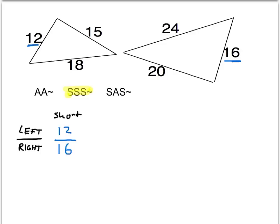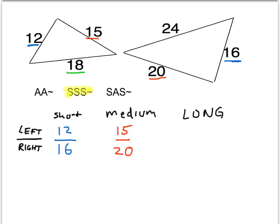And I want to see if those ratios are equal to the medium side lengths. The medium side length in the left triangle is 15. The medium side in the right triangle is 20. So the ratio will be 15 divided by 20. And then lastly I want to see if that ratio is equal to the long side of the triangle on the left divided by the long side of the triangle on the right — so 18 divided by 24.